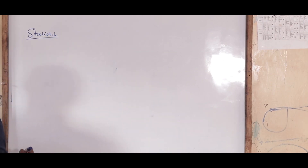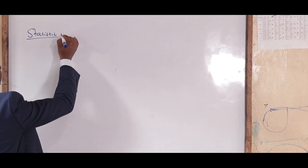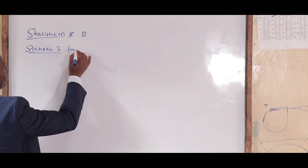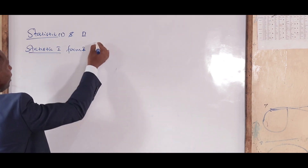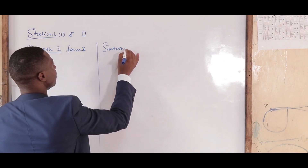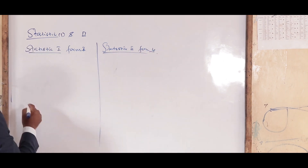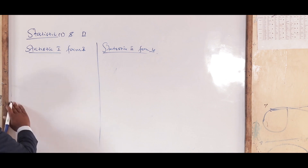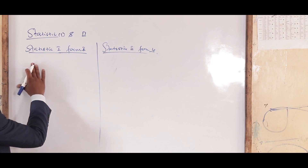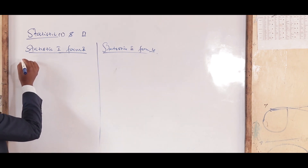Today we are looking at statistics — Statistics 1, which is in Form 2, and Statistics 2, which is in Form 4. As a candidate or student preparing for these topics, you need to understand what is covered in each. In Statistics 1, we divide it into two parts.